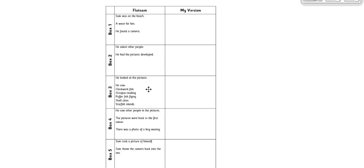In box three, this is the main part of the story. This is the really exciting thing. He looked at the pictures. He saw clockwork fish, octopus reading, puffer fish flying, shell cities, starfish islands. Now, in this box, this is not good writing — this is just ideas. I haven't written in great long sentences with noun phrases and commas and adverbs and all the amazing things we can use. I've just made notes.